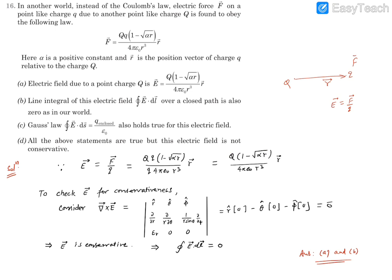So, now the field will not be Q/(4πε₀R²)R vector, rather it will have this factor as well. So, if you look at option A, it matches perfectly, hence A is going to be the correct response.